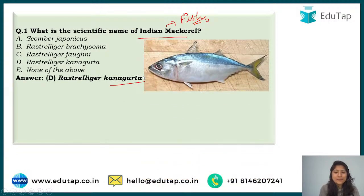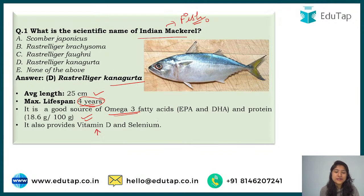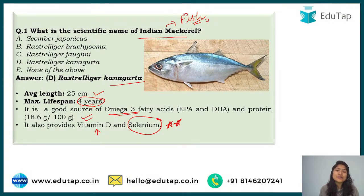Indian Mackerel looks like this. Its average length is 25 centimetres, its maximum lifespan is four years, and it is a good source of omega-3 fatty acids as well as protein. It also provides vitamin D and selenium, which are very important for the human body. Gaurav gave the correct answer. The takeaway is that scientific names of important fishes — Katla, Rohu, Indian Mackerel — can come in the exam.